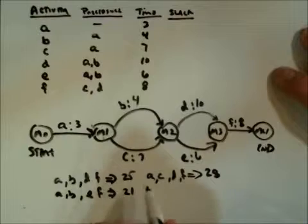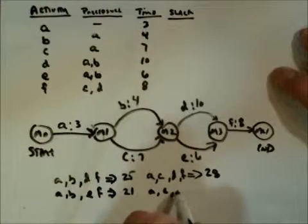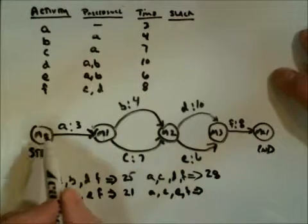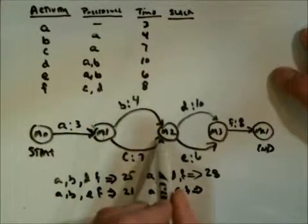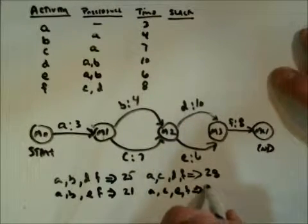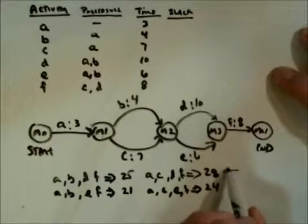And then the final route possible would be A to C, to E, to F, 3. 7 is 10, 6 is 16, 8 more is 24. Now, you see the four possible routes. This one is the longest. It would be the critical path.